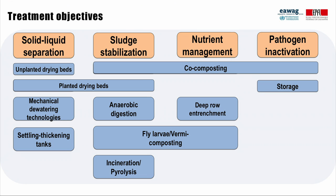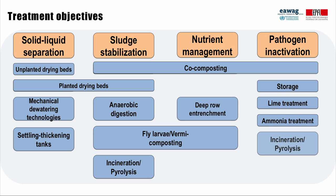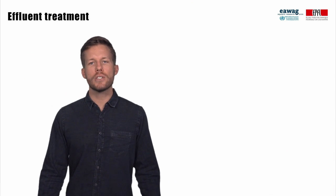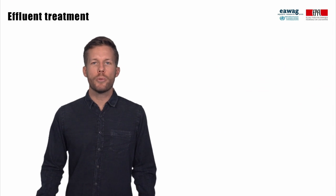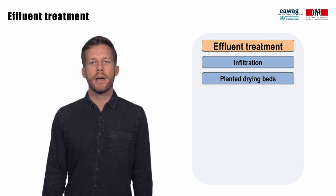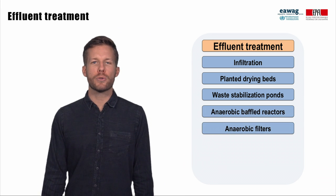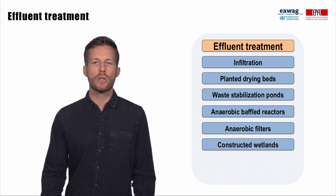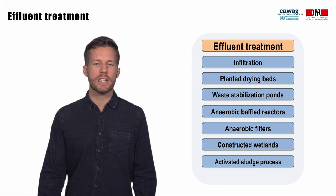The appropriate level of inactivation of pathogens for the intended use of treatment products must be a priority to protect public health. Co-composting, storage of dried sludge, lime and ammonia treatment, and incineration and pyrolysis are technologies that achieve high levels of pathogen inactivation. Since fecal sludge is mostly comprised of water, all technologies for solid-liquid separation — and also, for example, anaerobic digestion — produce liquid effluents that require further treatment. Technologies for effluent treatment include infiltration, planted drying beds, waste stabilization ponds, anaerobic baffled reactors and filters, and constructed wetlands. If treatment is located adjacent to a wastewater treatment plant, it could also include co-treatment with waste stabilization ponds or technologies based on activated sludge processes.